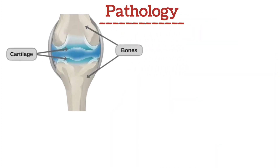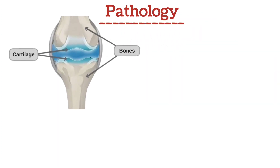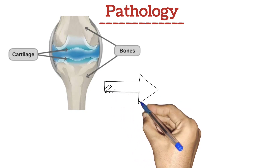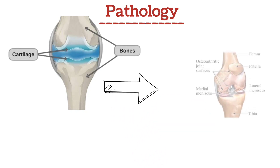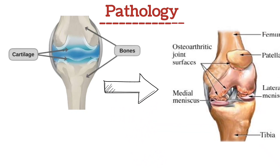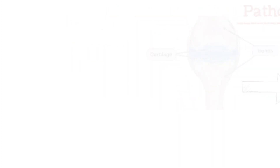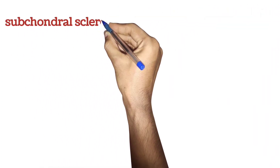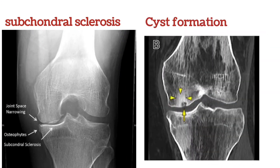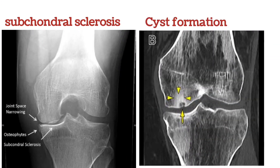Pathology: OA primarily affects the articular cartilage, which serves as a shock absorber. Over time, erosion occurs, leading to cartilage loss and exposing the underlying bone. Changes in the bone — such as subchondral sclerosis, cyst formation, and osteophyte formation — further contribute to joint degeneration.